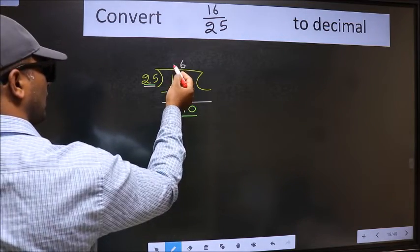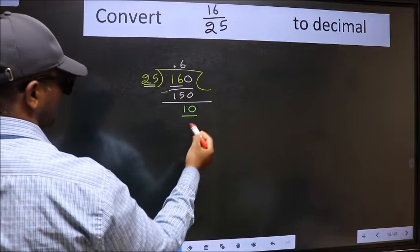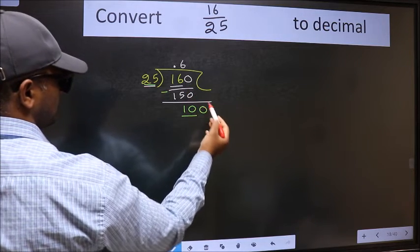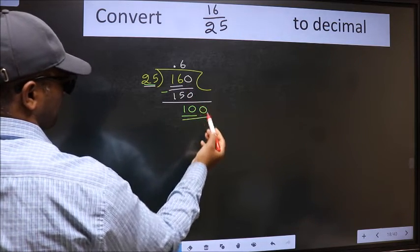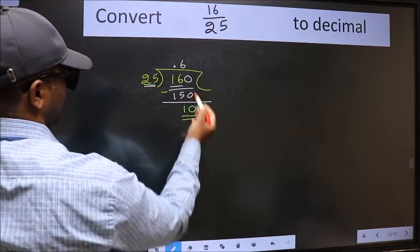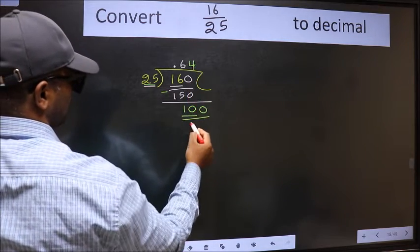And we already have the decimal. So this time we can directly take 0. So, 100. When do we get 100 in the 25 table? 25 times 4, 100.